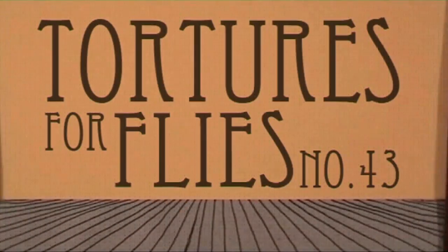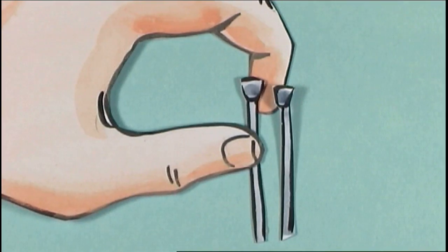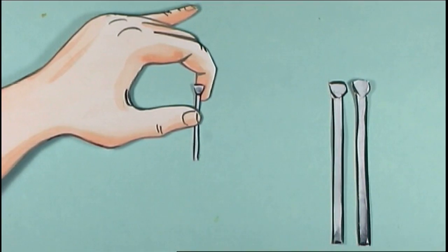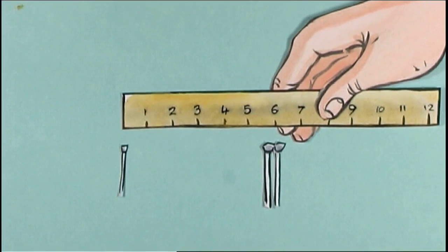Torches for flies number 43. Stick two pins close together onto a flat surface, and another pin exactly six inches away from the first two.